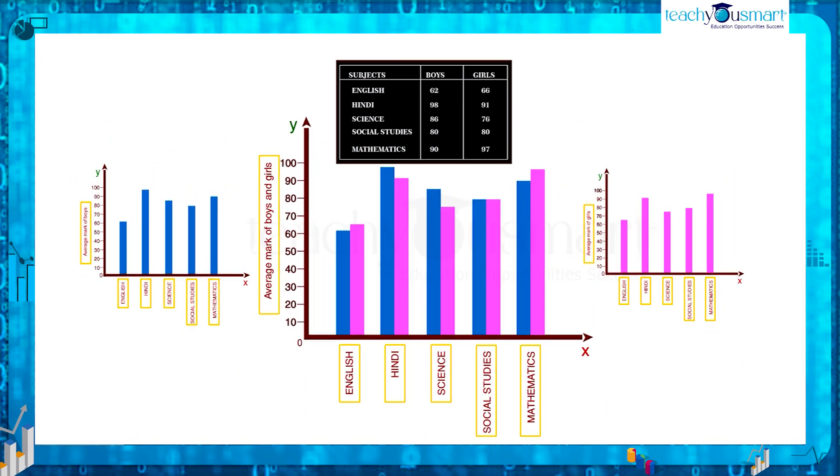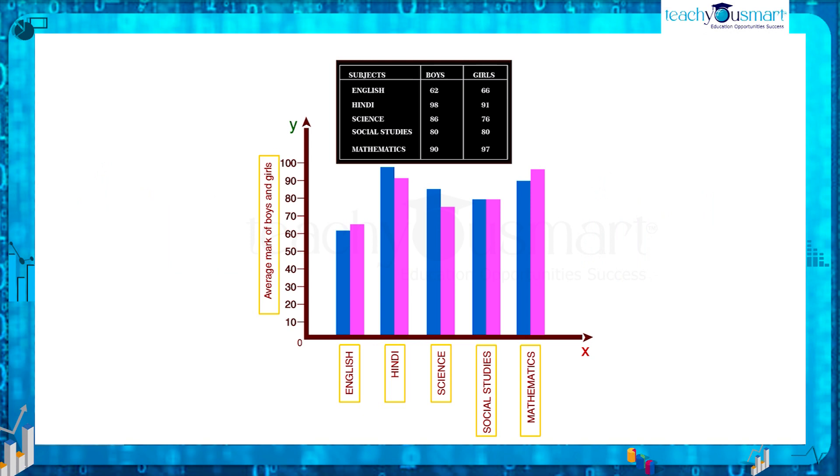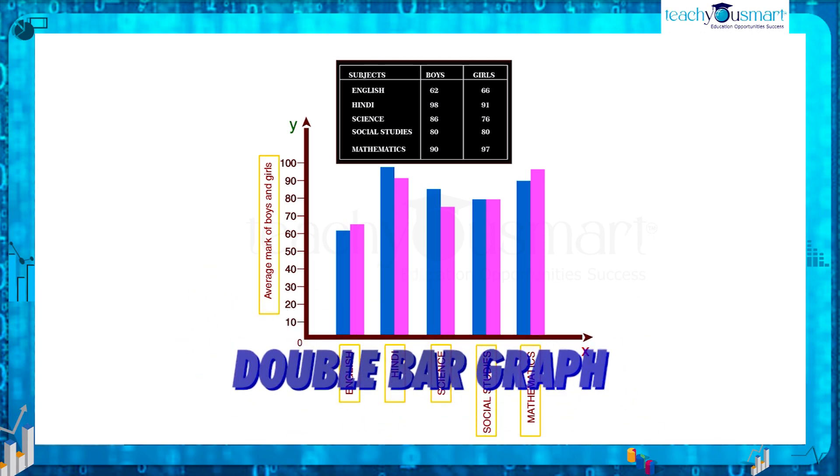If we represent data together it will be more convenient to understand the average marks of a class. This will lead to a double bar graph.